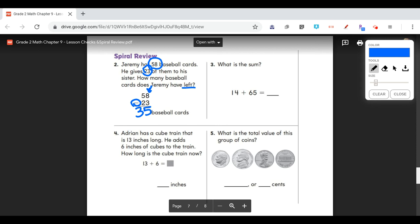The next one. What is the sum of 14 plus 65? I don't like to add numbers horizontally when they're this big. So I'm going to rewrite it off to the side. I'm going to put 14 plus 65, making sure that I have my place values lined up. So I add my ones first. 4 plus 5, which equals 9. Then I add my tens. 1 plus 6, which equals 7. So my answer or my sum is 79. So I'm going to fill that in on my line.